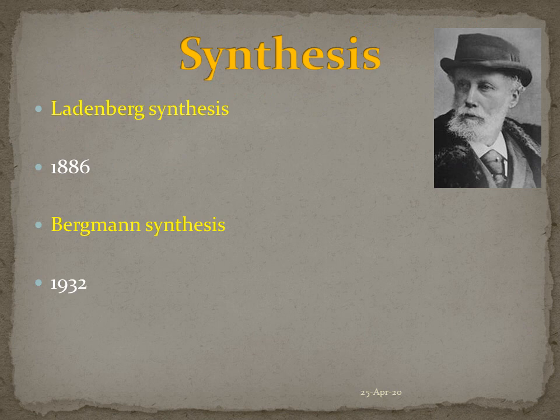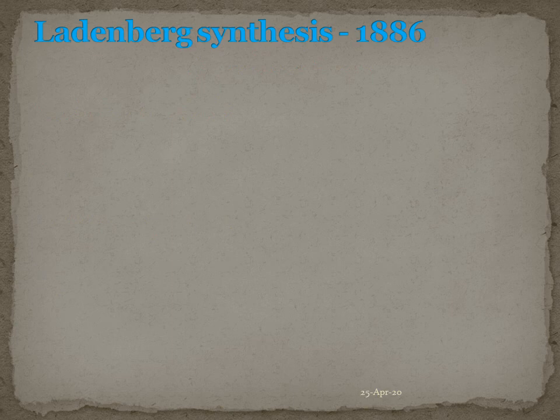Coming to the synthesis part — although today there are various synthetic procedures available to synthesize conine, I am going to discuss two synthetic methods. The first one is the Ladenburg synthesis and the second one is the Bergman synthesis. Conine was first synthesized in the laboratory by Albert Ladenburg in the year 1886. It involves three steps.